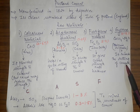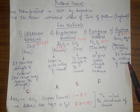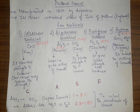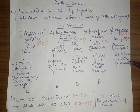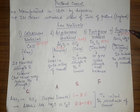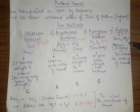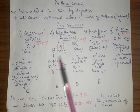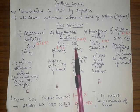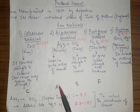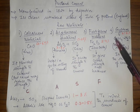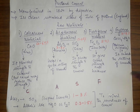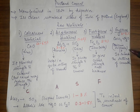Gypsum retards the setting time of cement. When cement is mixed with water it quickly sets up, and if setting is too fast the cement would flake up or develop cracks. To slow down its setting time, gypsum is added. The raw materials are thus: lime (C), alumina and silica (A and S), iron oxide (F), and gypsum.